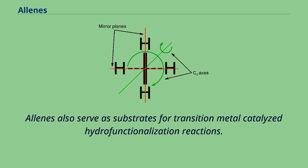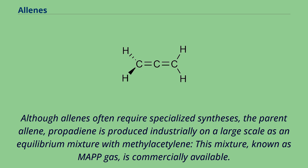Although allenes often require specialized syntheses, the parent allene, propadiene, is produced industrially on a large scale as an equilibrium mixture with methylacetylene. This mixture, known as MAPP gas, is commercially available.